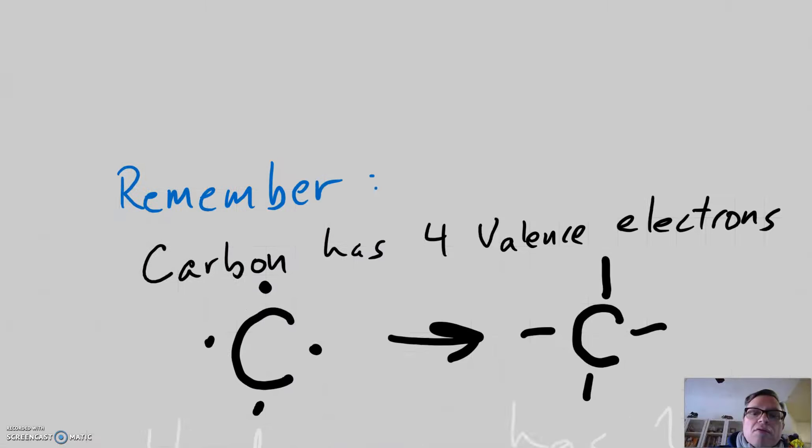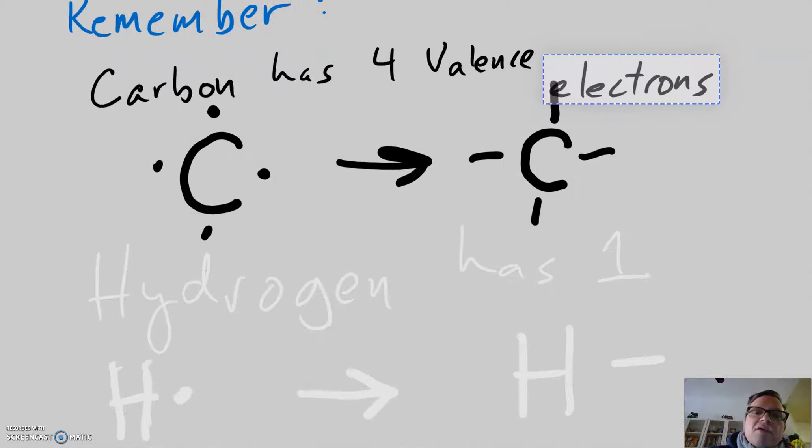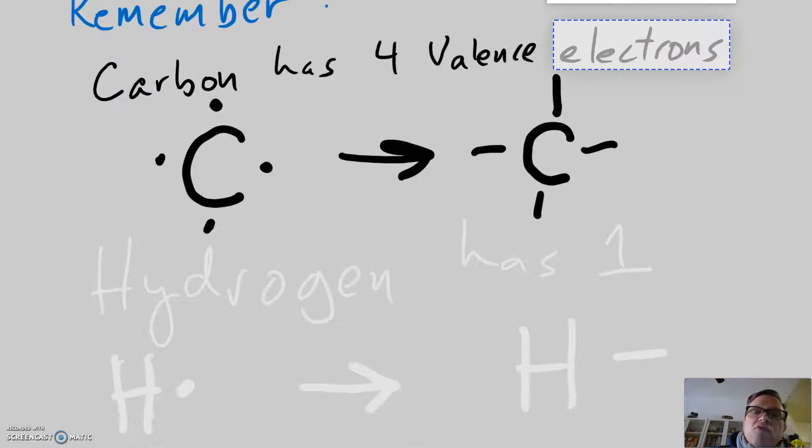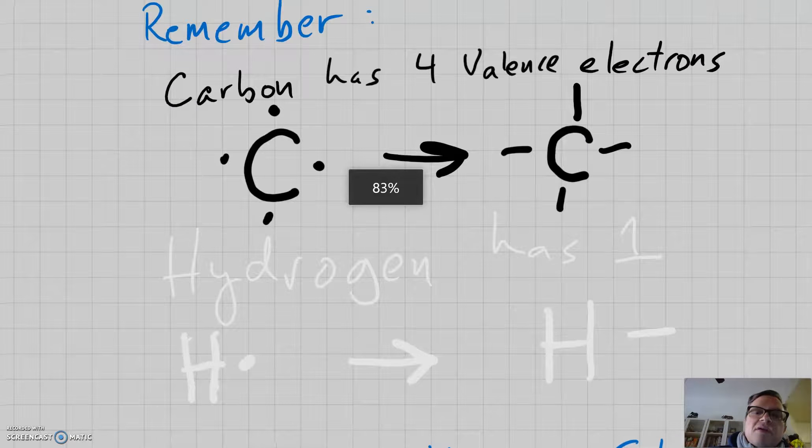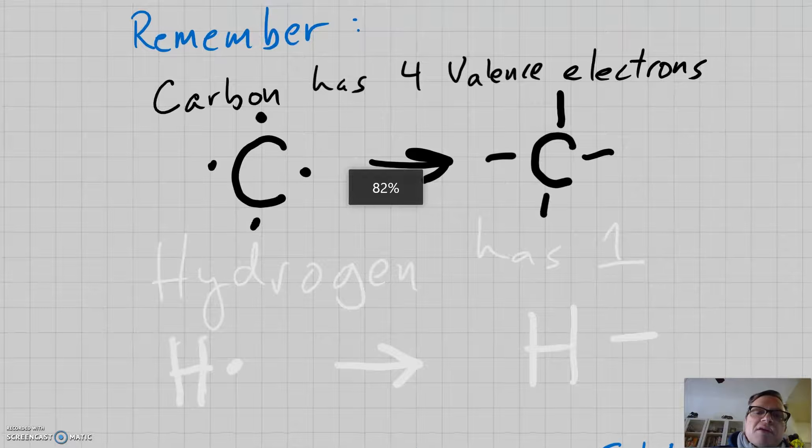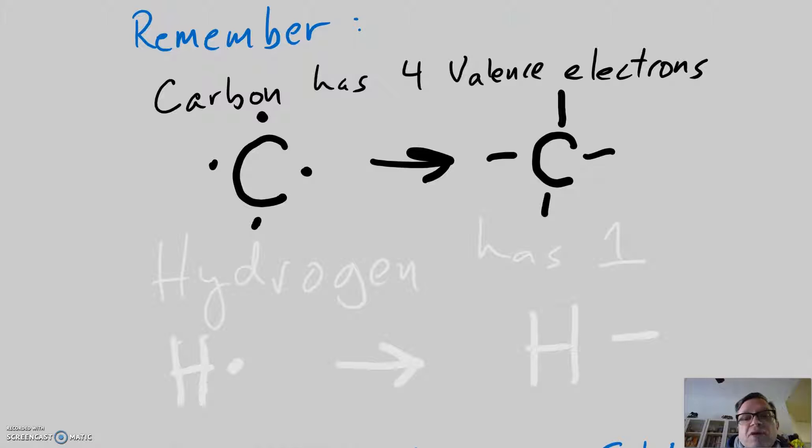Let's also remember that carbon has four valence electrons that are single, which means it can make four bonds. Hydrogen has one single electron which means it can make one bond. To reiterate, carbon can make four bonds, hydrogen can make one.